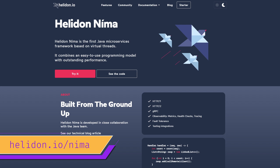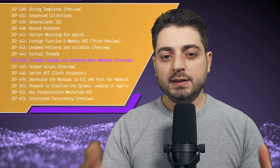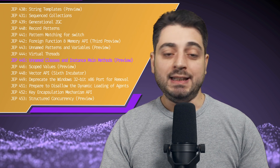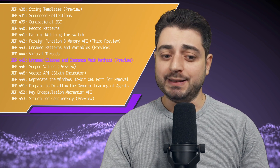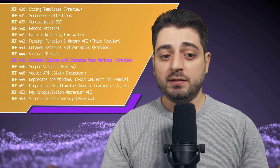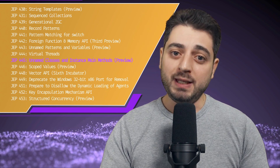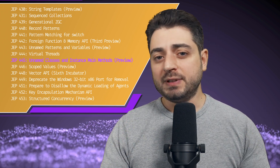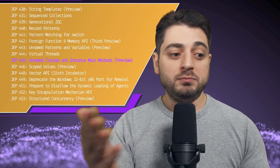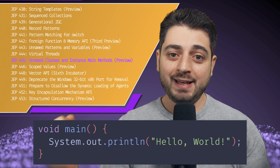The next item on the list is unnamed classes and instance main methods. This one scratches the itch of Java educators who are tired of explaining things like public final class or public static void main. So yeah, now they can just go void main. Yay!